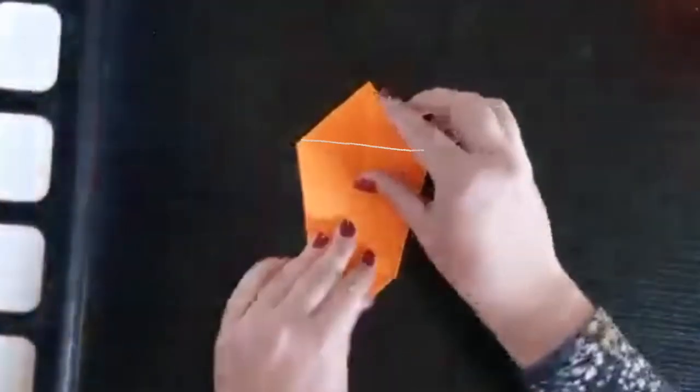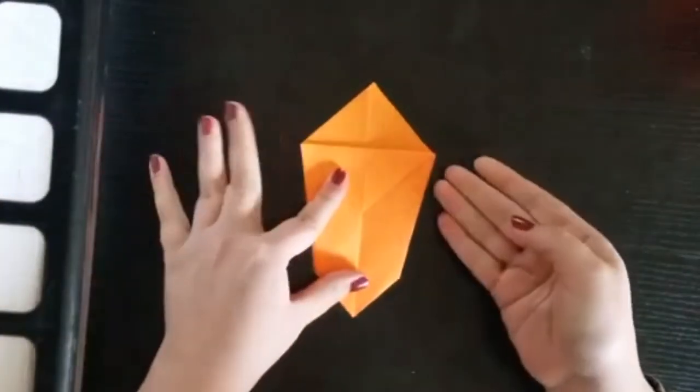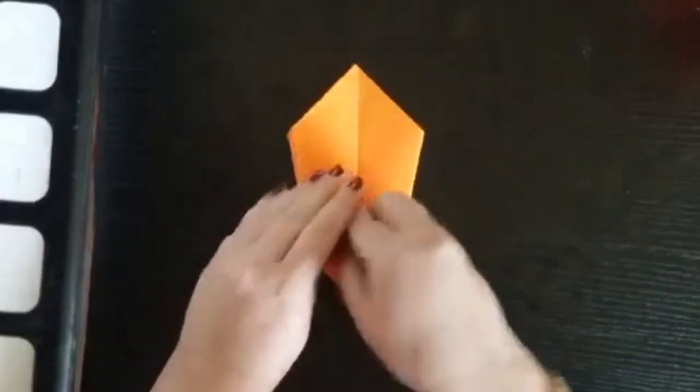Now fold one flap from the mouth piece down again, just like you did before. Flip the paper over and repeat this process.